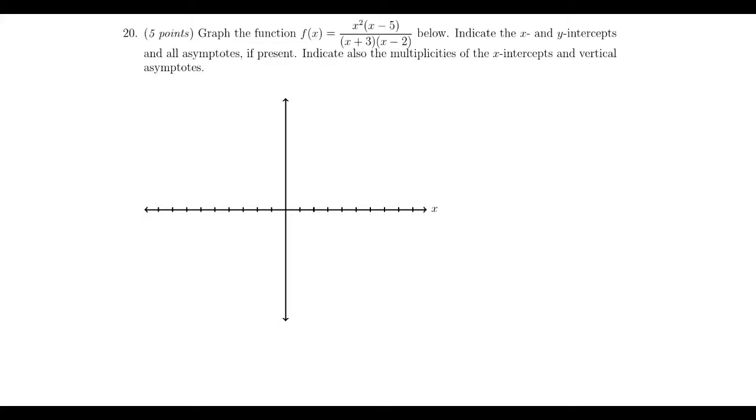To find the y-intercept, that's one of the easier things to find. The y-intercept is discovered by looking at f(0). We just plug in 0 for all the x's. So you're going to get 0 times negative 5 over 3 times negative 2. That simplifies to 0. So the y-intercept is 0, and it's also an x-intercept. I'm going to label this on the graph at (0,0).